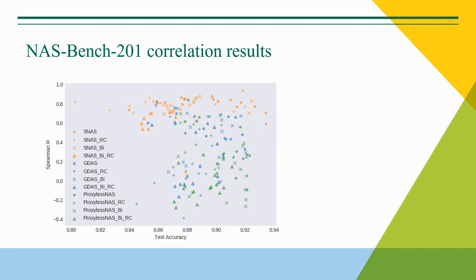Exploring the correlation results can help explain why this may be the case. What we're looking at isn't a traditional correlation plot, as each point actually represents a sample of 100 architectures, with the correlation plotted on the y-axis and the mean test accuracy of the sample plotted on the x-axis. This allows us to evaluate the algorithms both by the ability to find high-performing architectures and the ability to approximate the relative performance of candidate architectures. In theory, the purpose of using a shared weight model is to cheaply approximate the relative trained-from-scratch performance of candidate architectures, but only SNADS actually seems to consistently demonstrate the ability to fulfill this purpose.